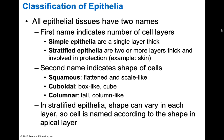Squamous cells are flattened and scale-like — kind of hexagonal, but very flat, like a fried egg from the side. The nucleus takes up a little bump in the middle. Cuboidal cells are like a cube or box. Columnar cells are taller like a column, with elongated nuclei — the nucleus is slightly oval instead of circular, which helps differentiate them. In stratified epithelial tissue, the shape can vary per layer, but you name it according to the apical layer — whatever is the topmost layer.